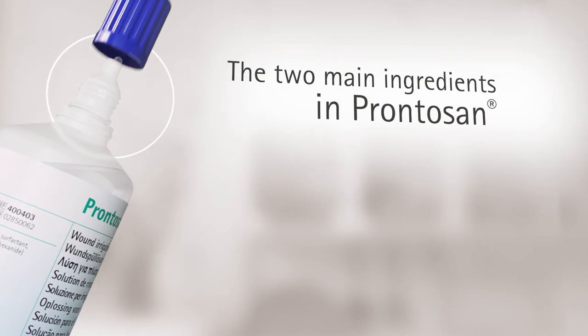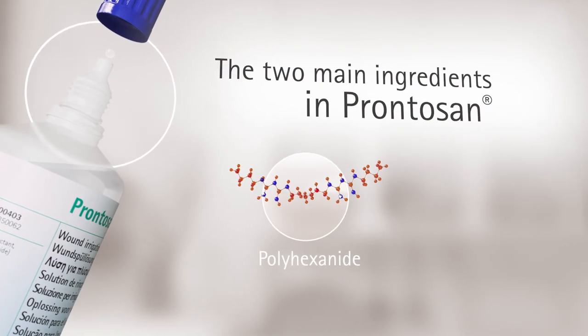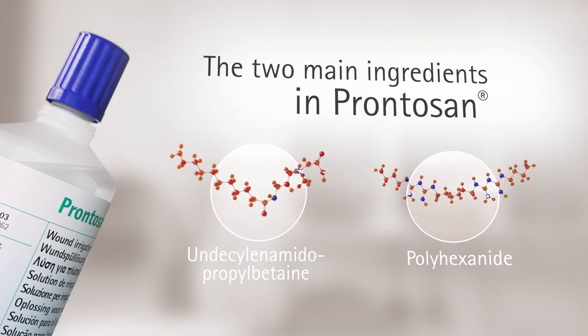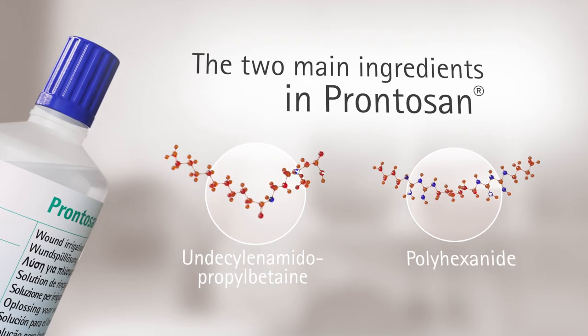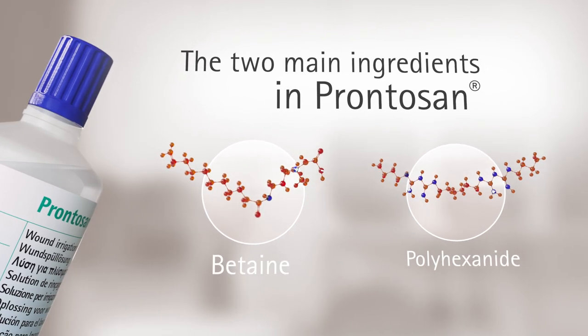The two main ingredients in Prontosan's solution are polyhexanide and undecylenamidopropyl betaine. To keep it simple, we call it betaine.